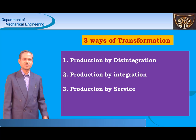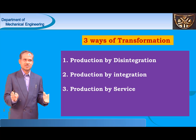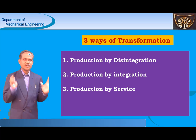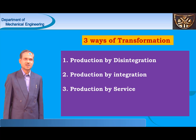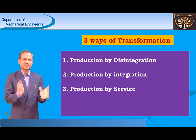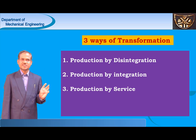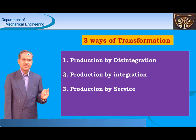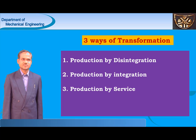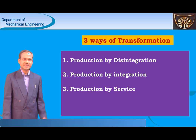The desired form means finished product stage. The transformation may be done in one or a combination of the following ways — to convert raw materials into finished goods. There are three ways: first, transformation by disintegration; second, transformation by integration; third, transformation by service. I would like to explain each one elaborately by giving some examples.